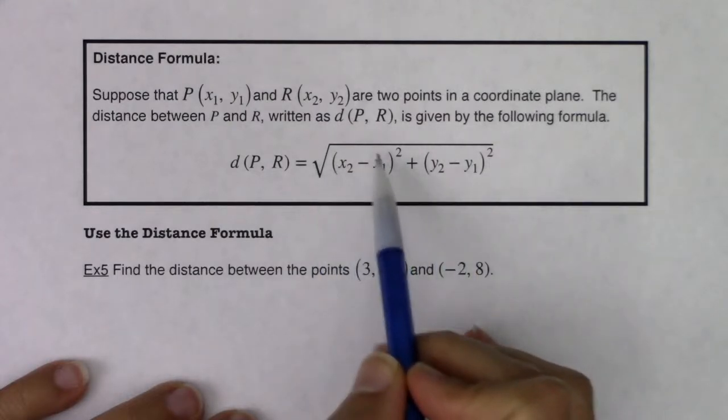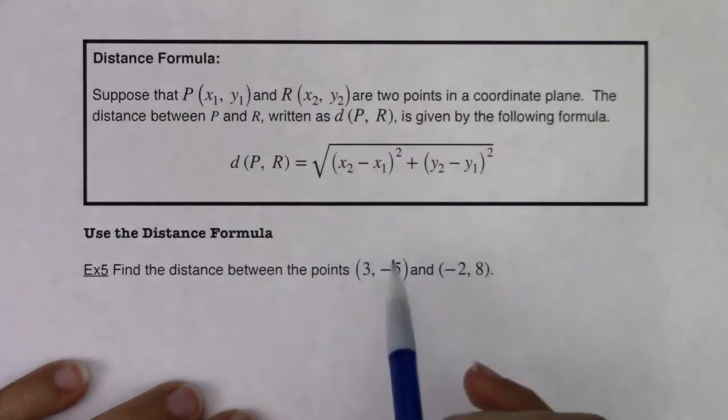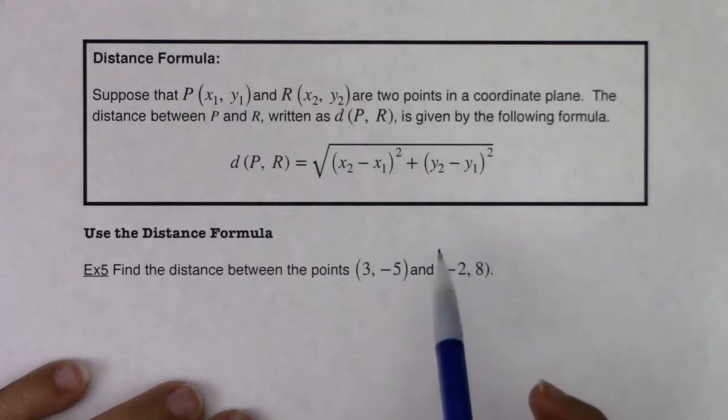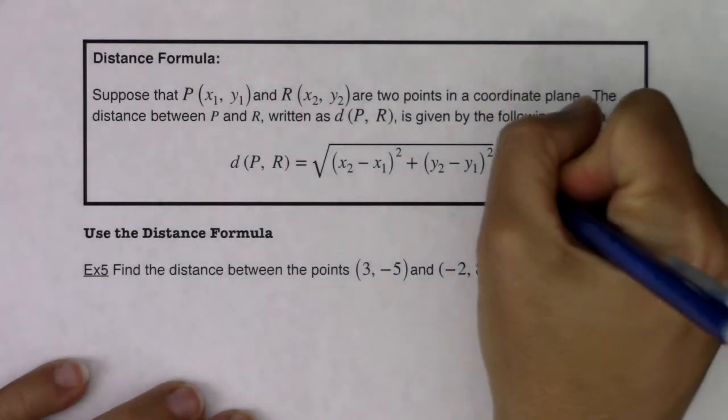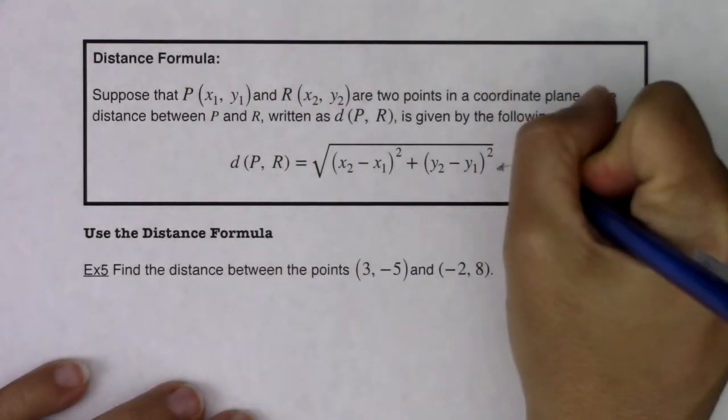So we will do the square root of the difference in the x-coordinate squared plus the difference in the y-coordinate squared. And this is an application of the Pythagorean theorem.